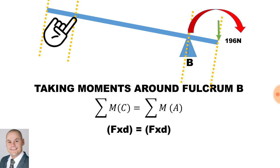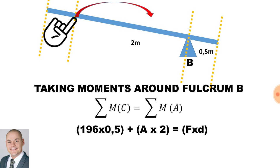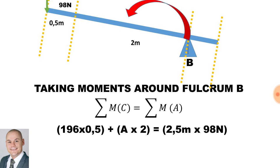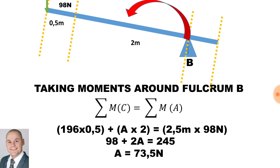For the clockwise moment, we have a force of 196 newtons pushing down, multiplied by the distance of 0.5 meters. We have another clockwise moment from point A multiplied by the distance of 2 meters — that is the unknown force A. For the anticlockwise moment, the 98 newtons pushing down is multiplied by 2.5 meters. If we simplify this mathematically, 98 plus 2A is equal to 245. Therefore, 245 subtract 98, divided by 2, means the unknown force A, which is pushing up, is 73.5 newtons.